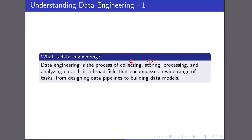Or there could be data continuously coming from an IoT sensor. The type of data coming from all sources is in different forms, so one single storage will not be good for storing all kinds of data. For example, to store images and videos, the type of storage required is completely different compared to CSV files. Where you store the data and in what format — that is the second step.